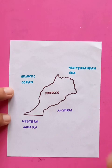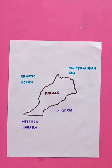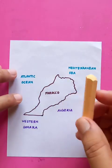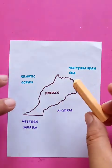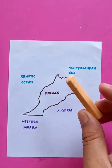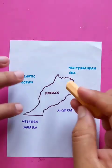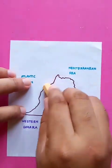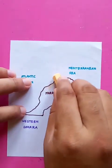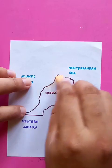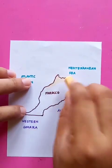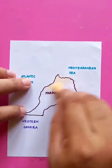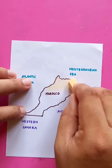We're going to put color with the crayon — you can see this is an oil pastel. I'm just moving it inside the borders just to define the shape of the country more precisely.